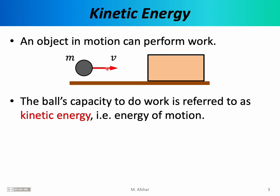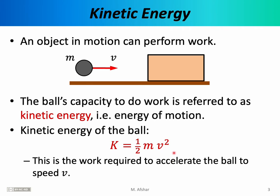An important question is how much work can we get out of this ball — what's the maximum amount of work achievable by throwing this object at other objects? The kinetic energy of the ball, denoted K, is equal to one-half times its mass times its velocity squared: K = ½mv². This formula should look familiar from a previous lecture on work, where we calculated the minimum work needed to accelerate an object from rest to speed v — that expression is exactly equal to this one.